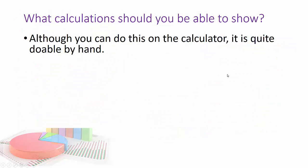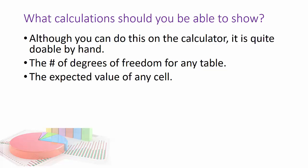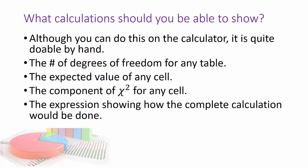So what calculations should you be able to show? The same as before. The number of degrees of freedom for any table, the expected value of any cell, the component of chi squared or the contribution for any cell, and the expression showing how the complete calculation would be done. And I think you should be able to do a residual as well, which is basically just kind of like the square root, but keeping your sign.